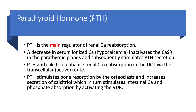Parathyroid hormone is the main regulator of renal calcium reabsorption. Just as the key to understanding sodium physiology is ADH (vasopressin), and for potassium it's aldosterone, for calcium the key is understanding PTH. When serum ionized calcium decreases — the definition of hypocalcemia — you inactivate the calcium sensing receptor in the parathyroid gland. When it is inactivated, you stimulate PTH secretion. PTH then enhances renal production of calcitriol, and both increase renal reabsorption in the distal convoluted tubule via the active transcellular route.